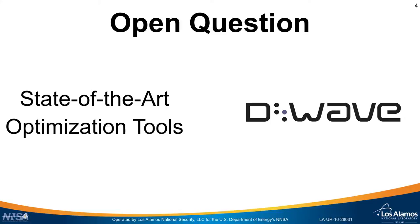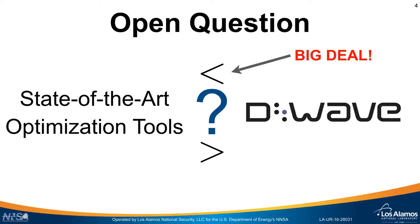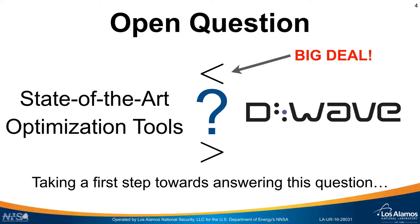This raises a very interesting open question: how do these state-of-the-art tools compare to the D-Wave hardware? If it were the case that the D-Wave hardware significantly outperformed these state-of-the-art tools, that would be a really big deal, because it would mean that this hardware has effectively outpaced decades of research in this particular area. So in this talk, we're going to take a first step towards answering this question — it's by no means the end of the story, it's just the beginning.